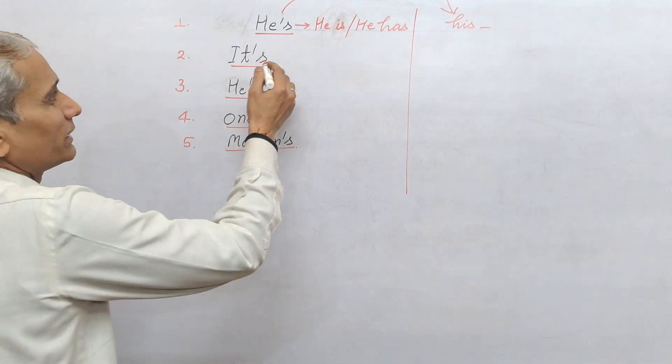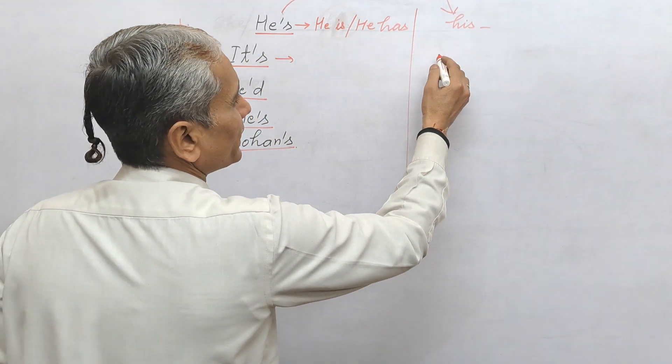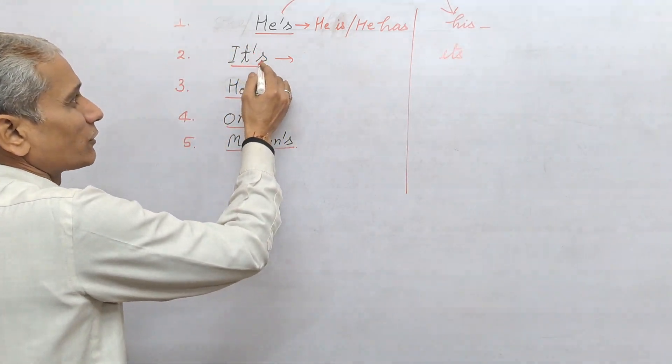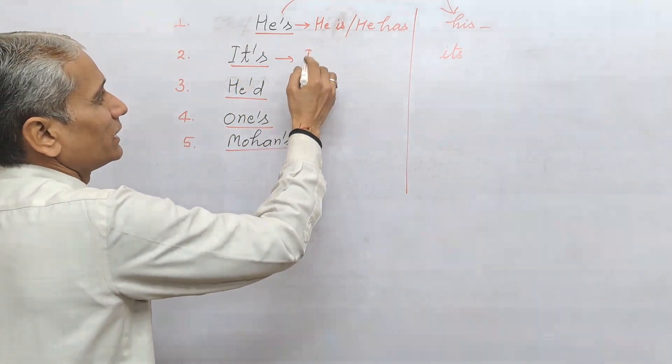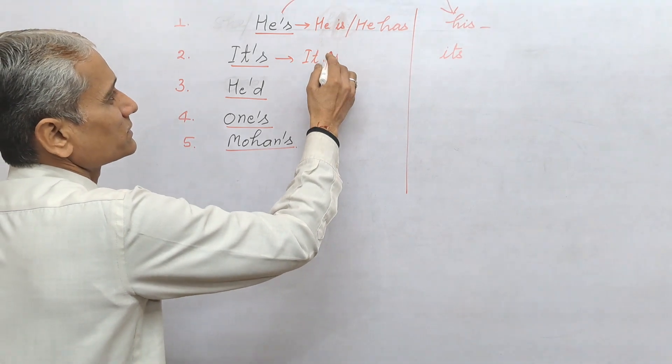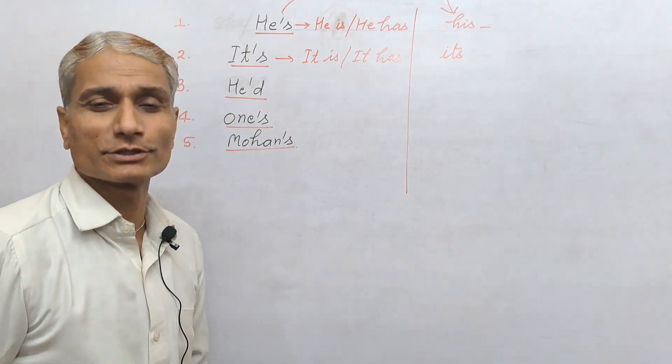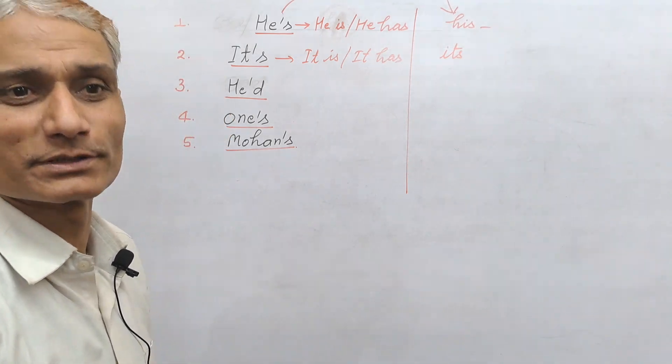The same way, its standard possessive is its. And it's (it apostrophe s) means it is or it has, according to the situation and as per the tense of the sentence.